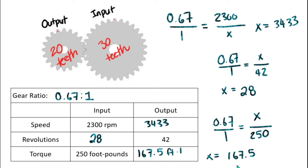To verify: I have a big gear driving a small gear — an overdrive situation. The big gear should spin more slowly, and it does. The big gear should do fewer revolutions than the small gear, and it does. However, there should be more torque at the big gear than at the small gear, and that is true as well.